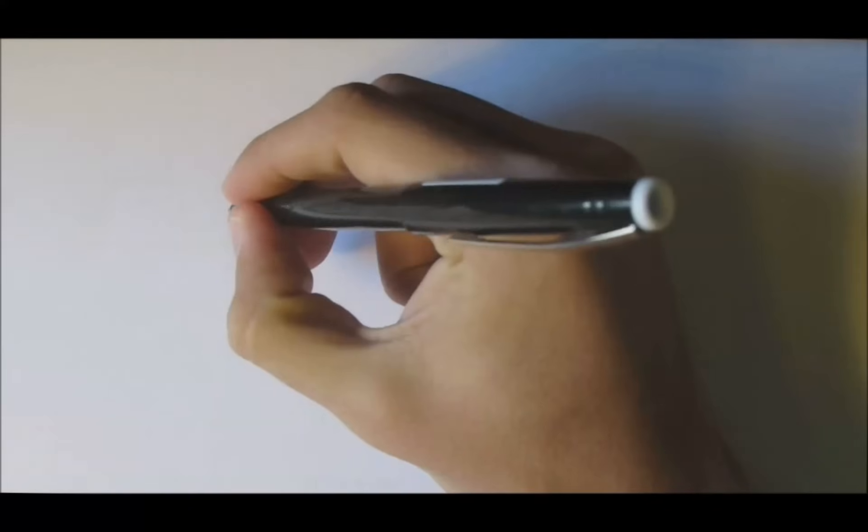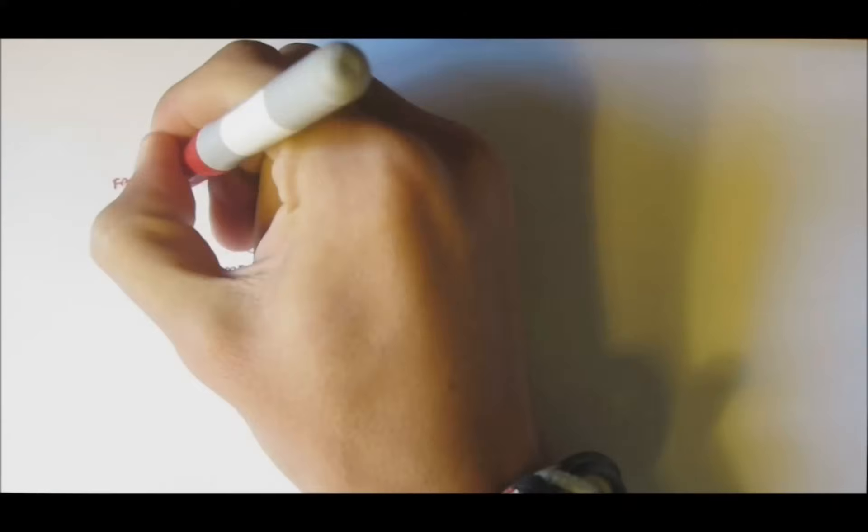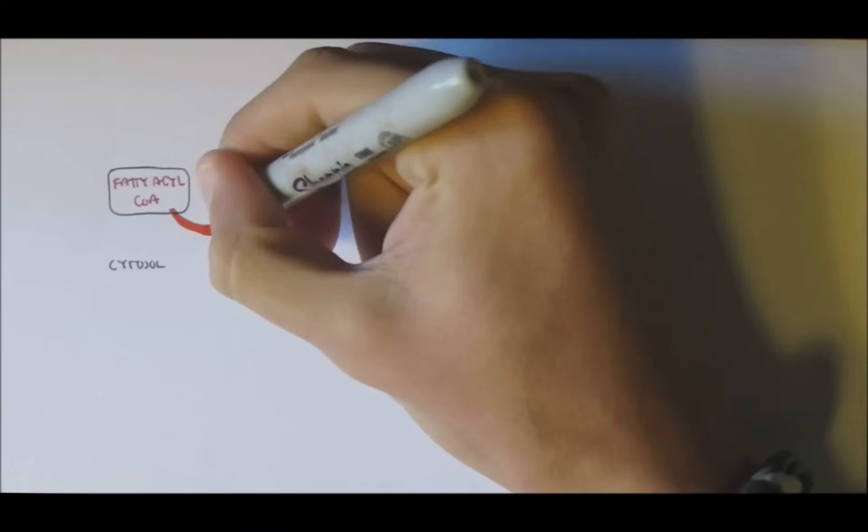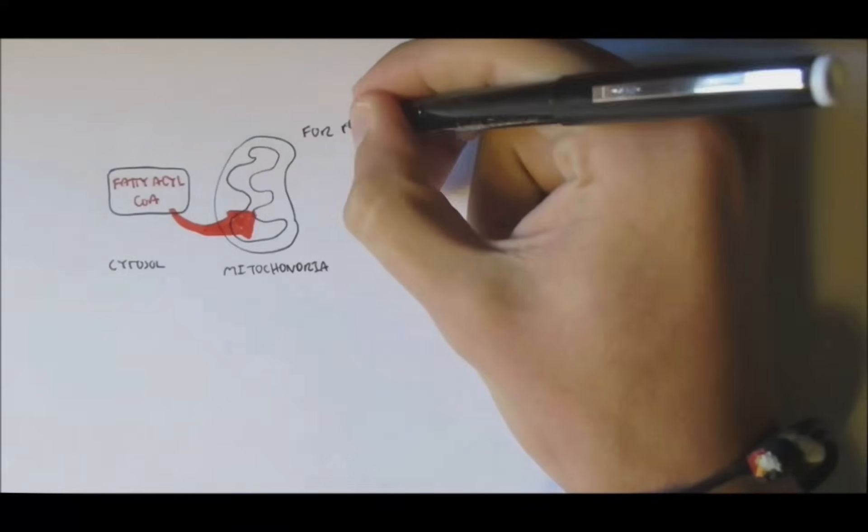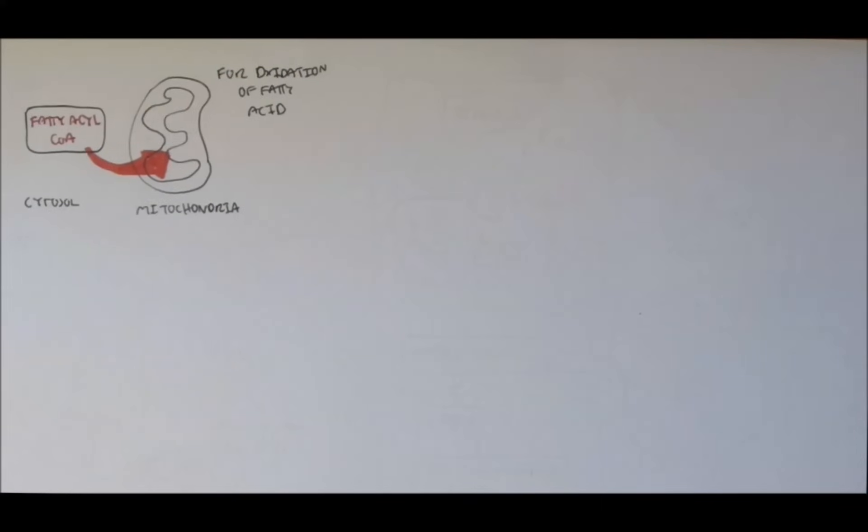So in the previous video, we learned how fatty acids were transported from the cytosol, where it was synthesized, to the mitochondria. Now, in the mitochondria, fatty acids can undergo fatty acid oxidation, when we need energy from fatty acids, in the form of acetyl-CoA.